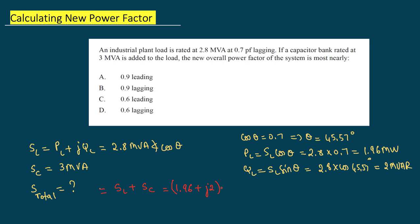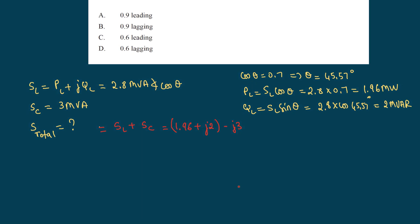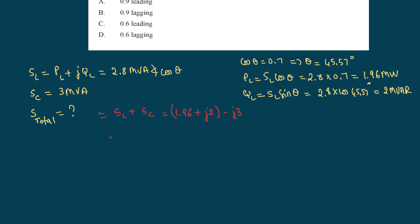And everything is in mega, so this is megawatts, MVAR, and MVAR, so we are good with units. We don't have to convert anything. And so this is my S_total. So now S_total is 1.96 minus j1. So this is my total system MVA.